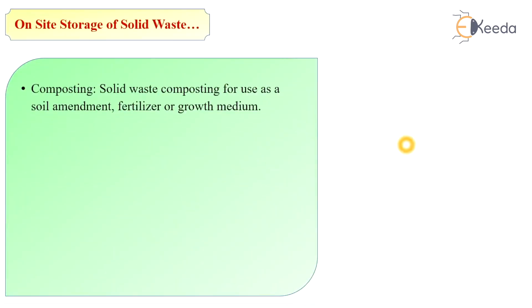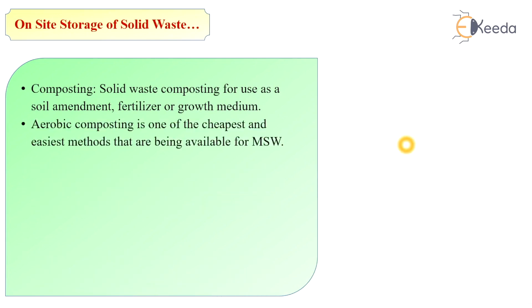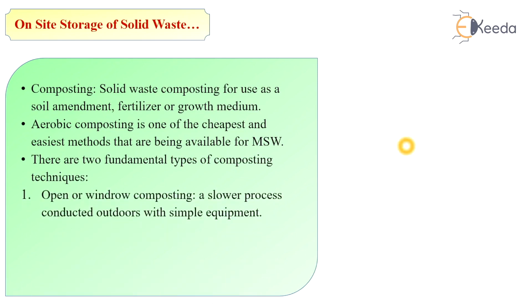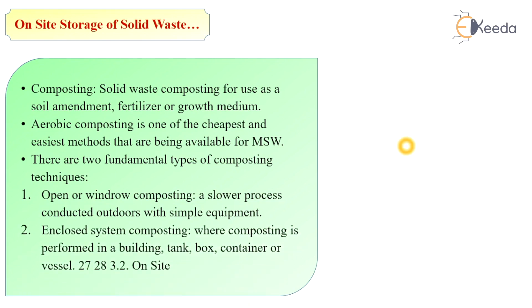Composting is one of the cheapest and easiest methods available for municipal solid waste. There are two fundamental types of composting techniques: the first is open or windrow composting, which is a slower process conducted outdoors with simple equipment; and the second is enclosed system composting, where composting is performed in a building, tank, box, container, or vessel on site.